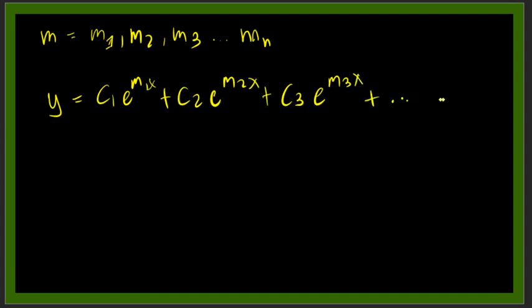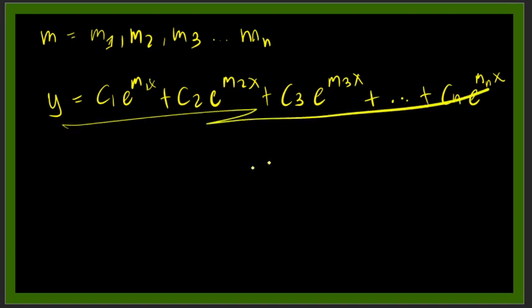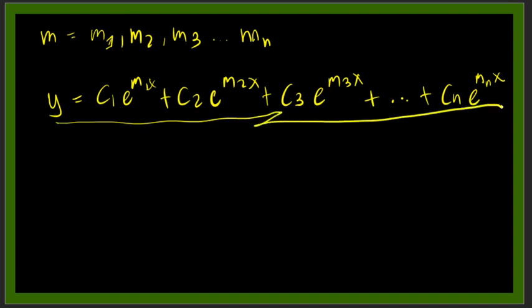Plus dot dot dot plus cn e raised to mn x. So this will be your general solution for auxiliary equation with distinct roots.